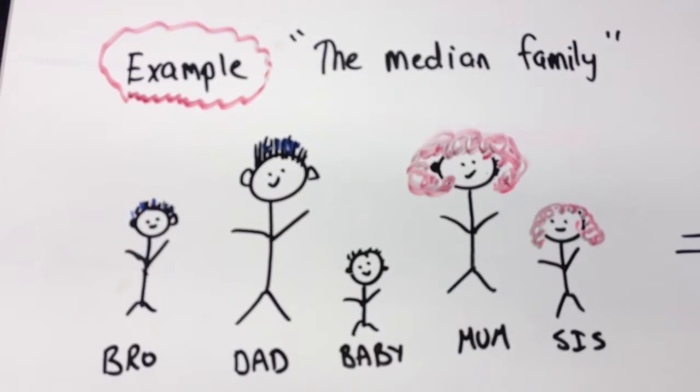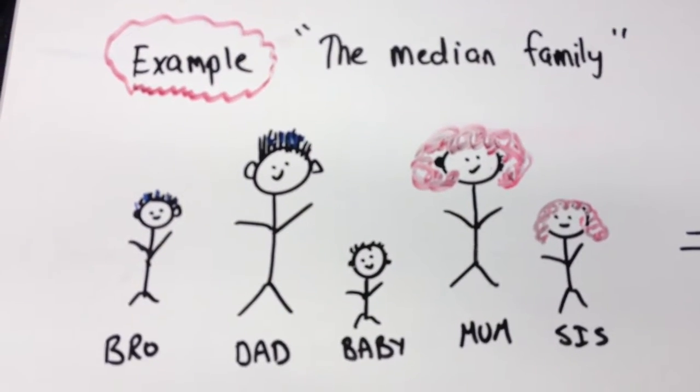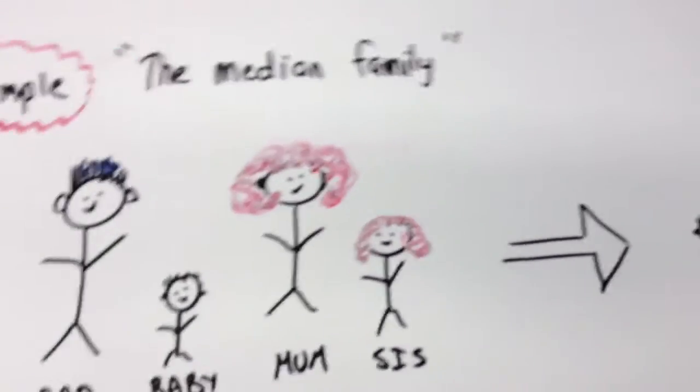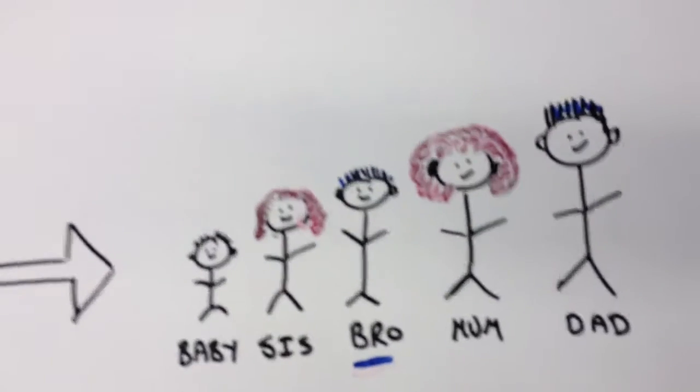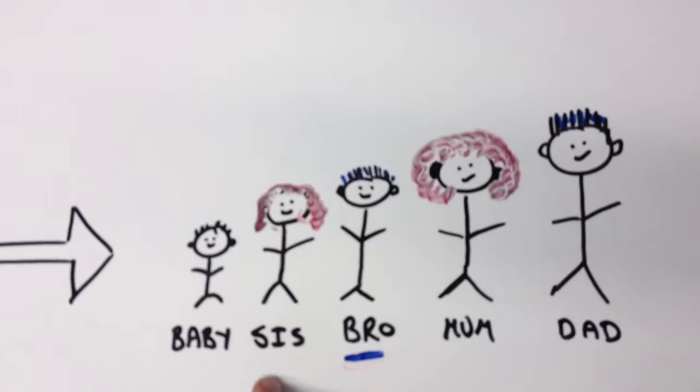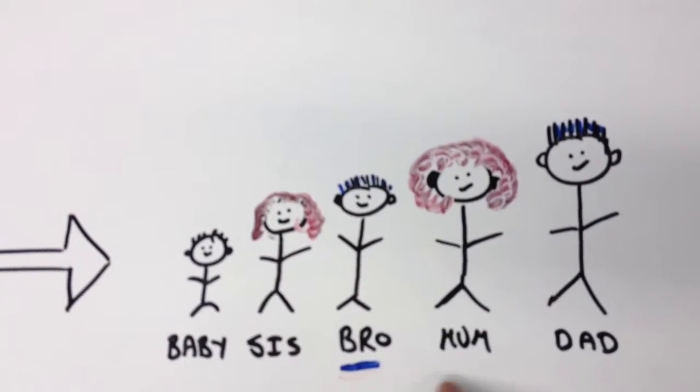Now we're going to find the median of the median family using their height. The first thing I need to do is put them in order. Here you can see Baby, Sis, Bro, Mum, and Dad.